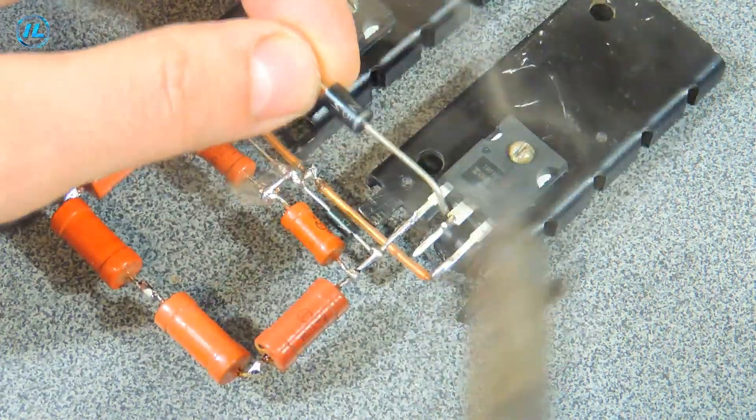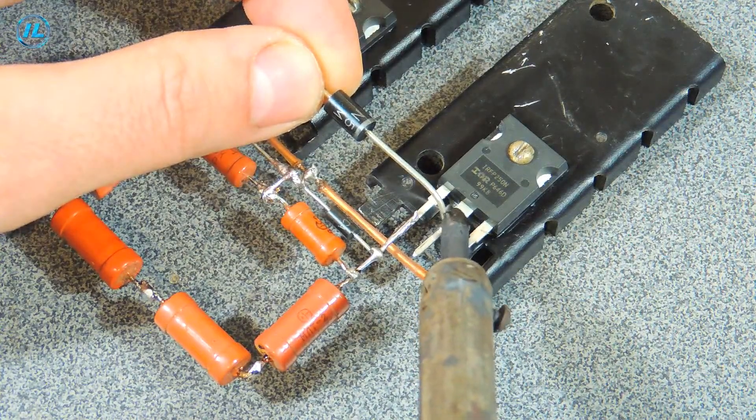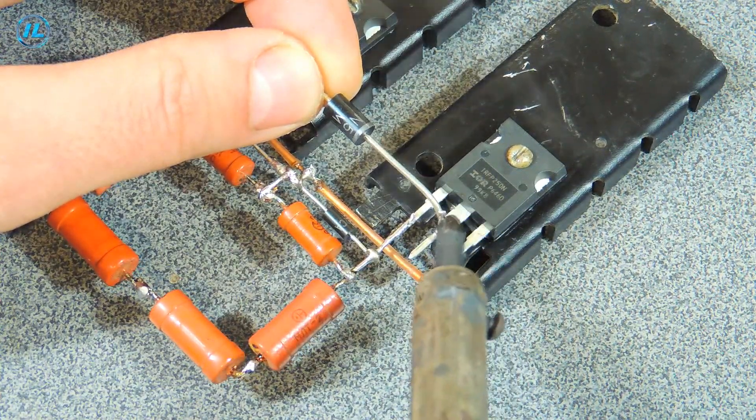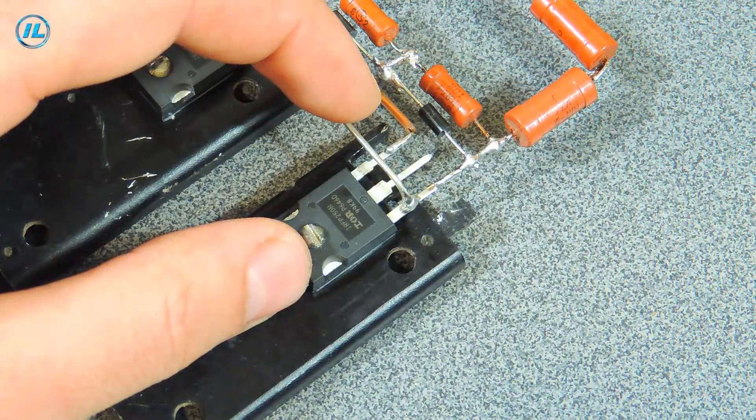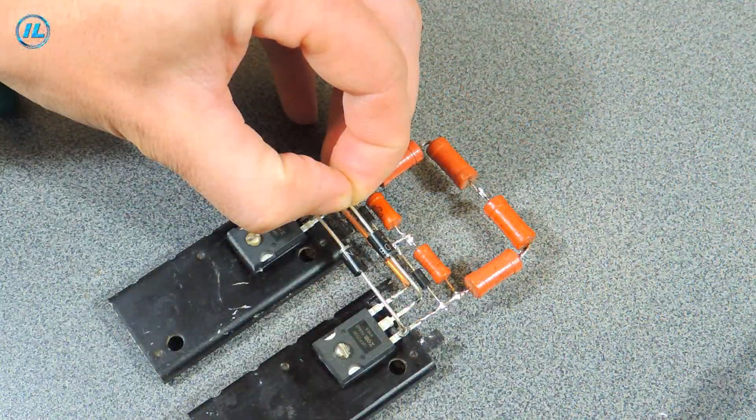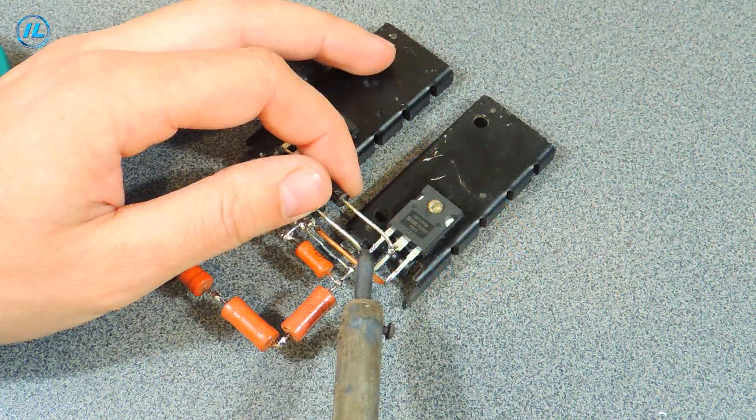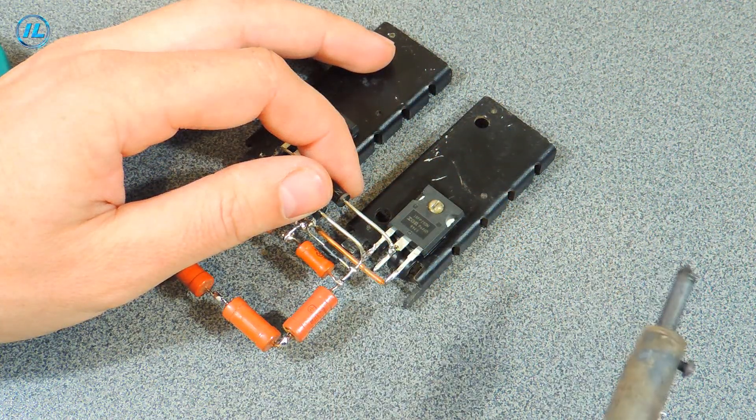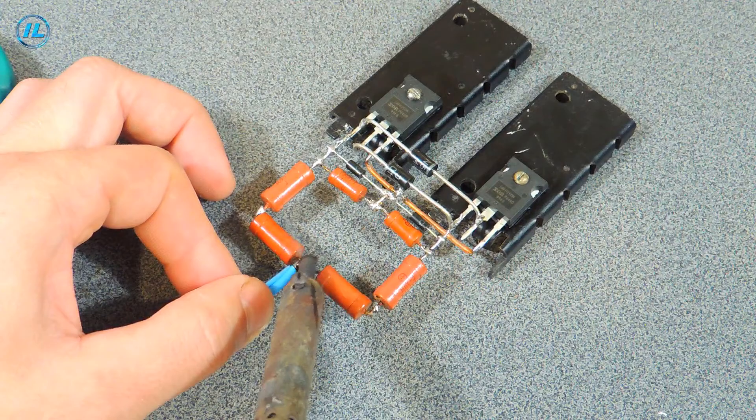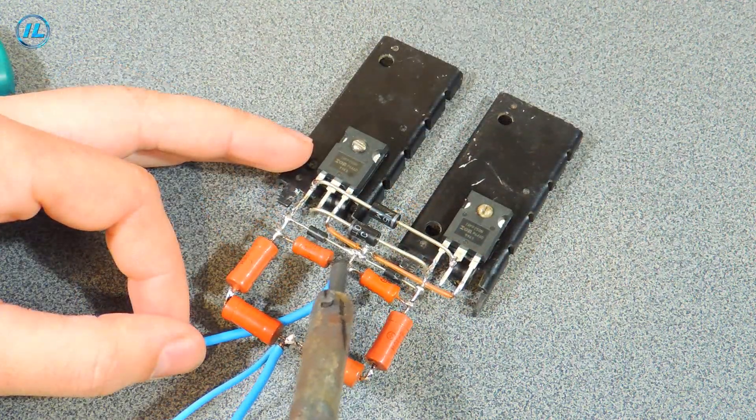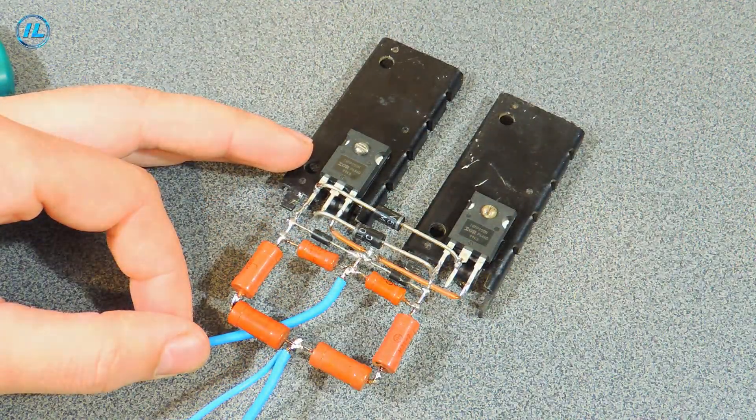It turns out that this is an interesting design, and here I have to solder the diodes. Well, the scheme itself is ready. Now it remains to wind the throttle and winding on the FPT.